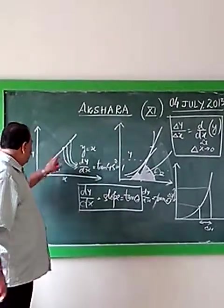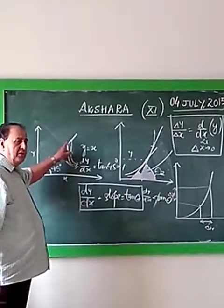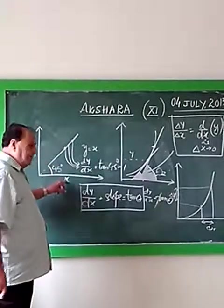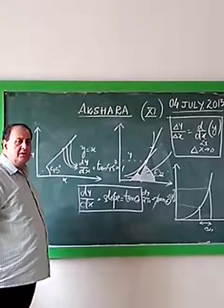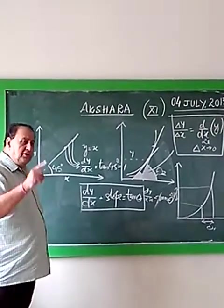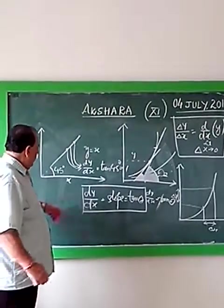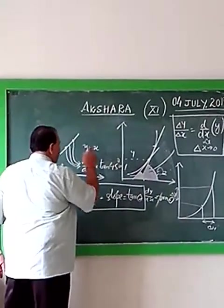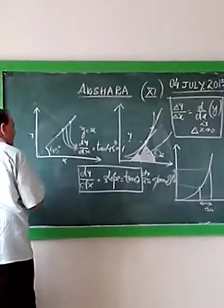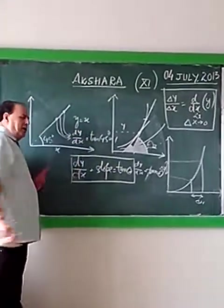So what do you remember? Number one: this means rate of change is constant. Rate of change of y with respect to x at this point is constant. What is constant? So rate of change is constant.